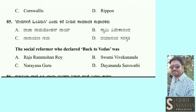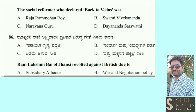Raja Ram Mohan Rai started the Brahmo Samaj and also wrote the book Sambadha Kaumudi. Swami Vivekananda started the Ramakrishna Mission to spread the teachings of his Guru Ramakrishna Paramhamsa. Narayana Guru fought against the caste system in Kerala.